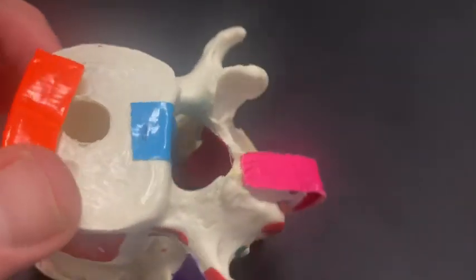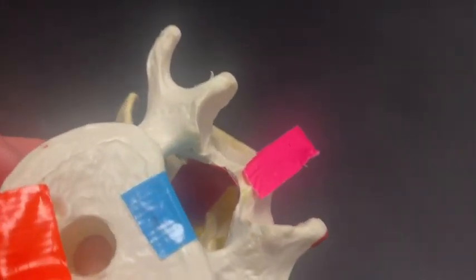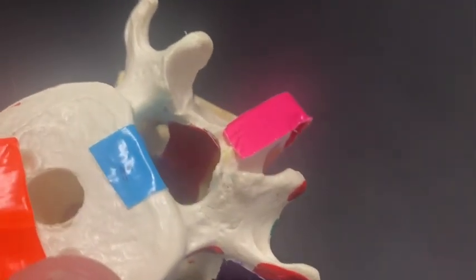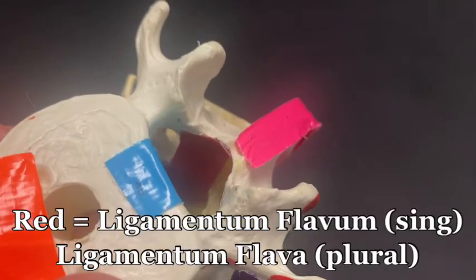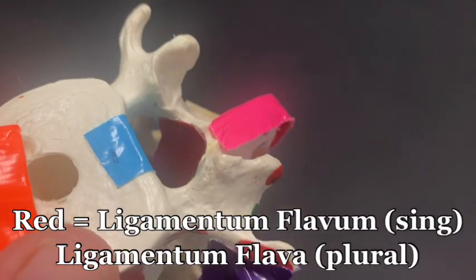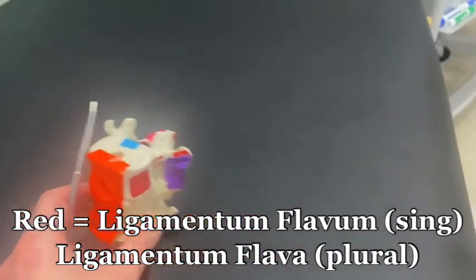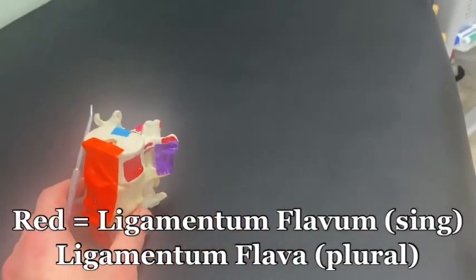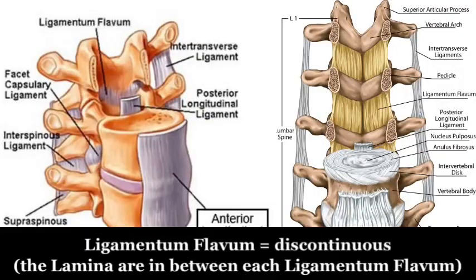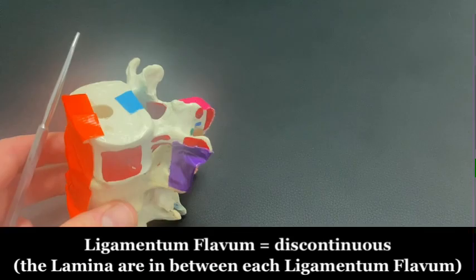Keeping it going, there's one in there that you can't really see that well, labeled in red — this is the ligamentum flavum. I'm going to put a picture on the screen of the ligamentum flavum as it's in between the lamina of the vertebrae.